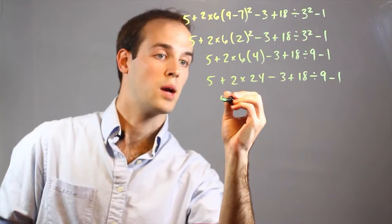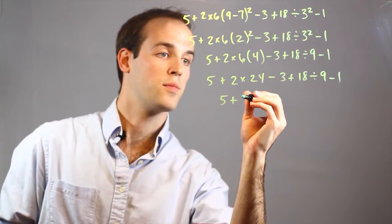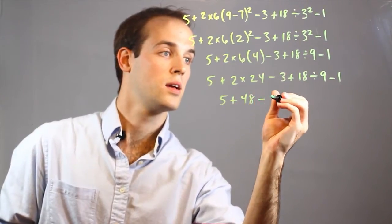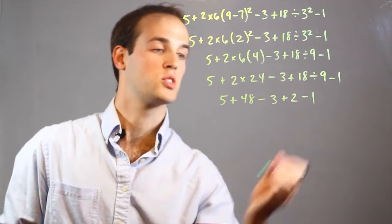And right here, I've got a 2 times 24, 5 plus 48, minus 3, plus 2, minus 1.